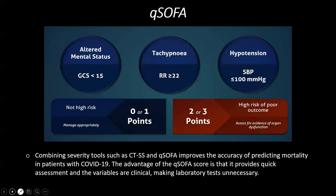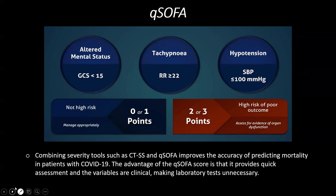In QSOFA, the parameters included are Glasgow Coma Scale, tachypnea — defined as respiratory rate greater than or equal to 22 — and hypotension, defined as systolic BP less than 100 mmHg. Each of these parameters is given a score of one.